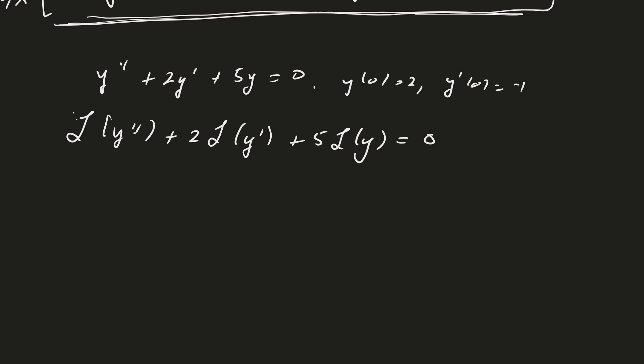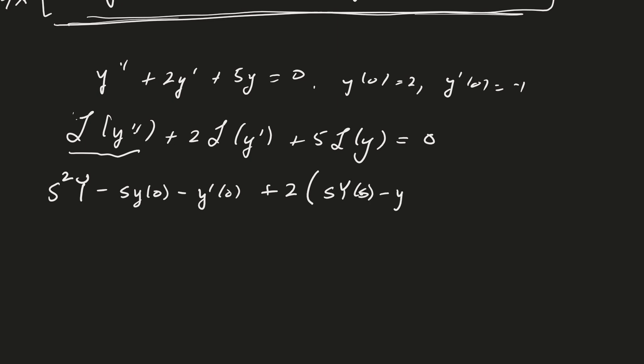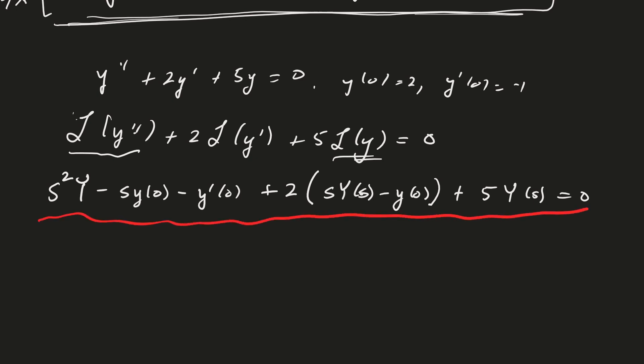Taking the Laplace transform of each term: the Laplace transform of y double prime gives s squared·Y(s) minus s·y(0) minus y prime(0), plus 2 times the quantity s·Y(s) minus y(0), plus 5 times Y(s) equals 0. This equation is no longer a differential equation — it's an algebraic equation in capital Y(s).